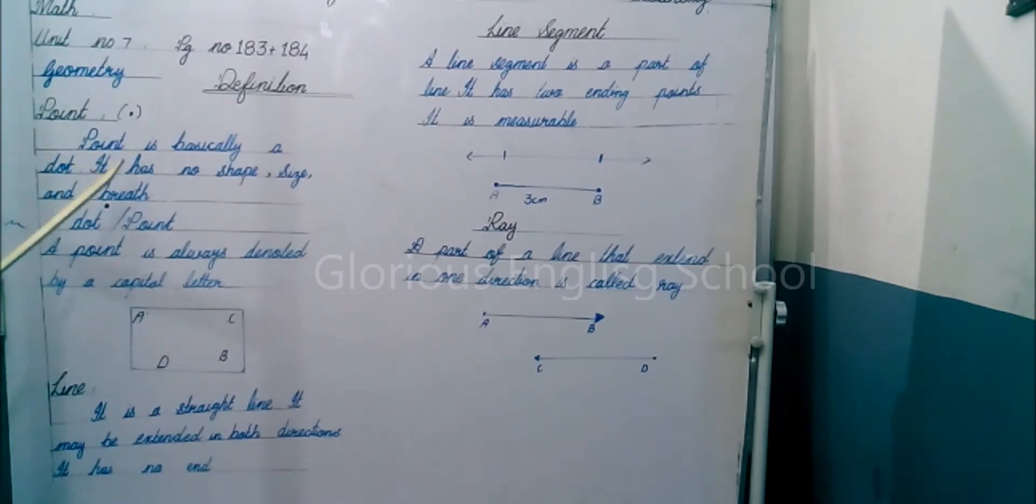A point is basically a dot. It has no shape, no size, and no breadth. A point is always denoted by a capital letter.